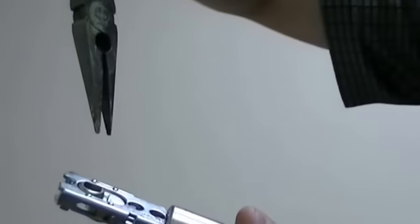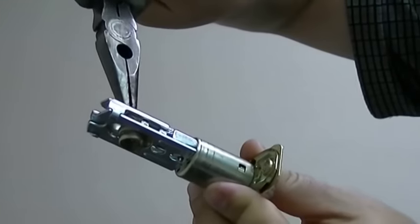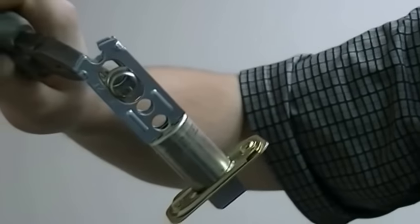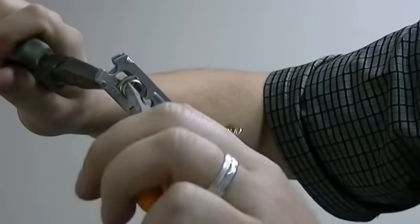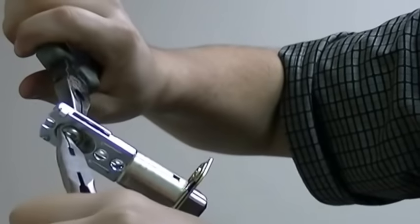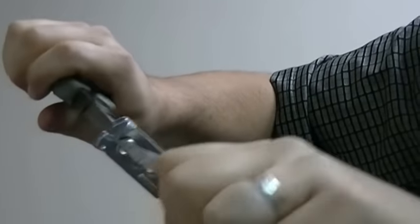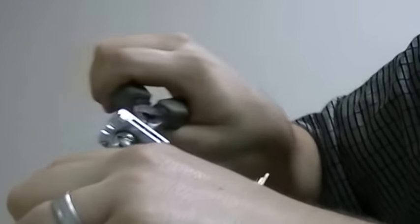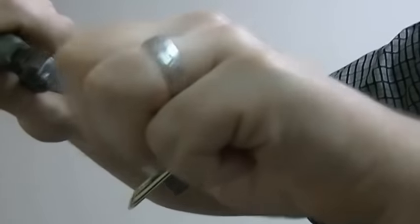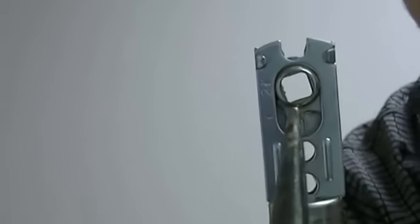To fix this, a couple needle nose pliers would help, maybe two sets. Take one set, grabbing the inside here on one, and take the other set of needle nose and grab here and push them together. This hand is going forward, this hand is coming back, pushing them together. Now the holes are together.